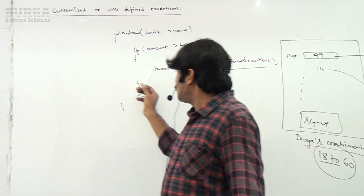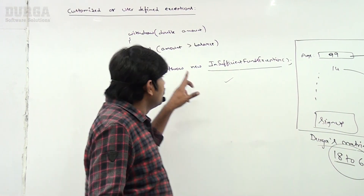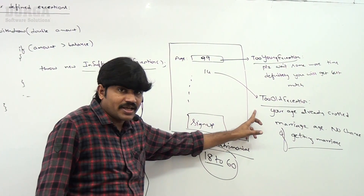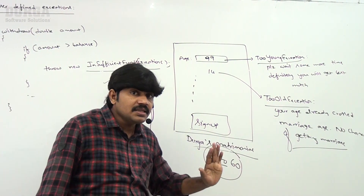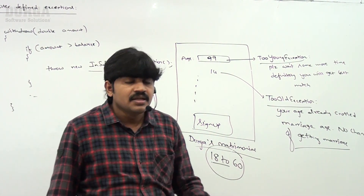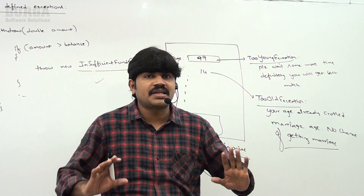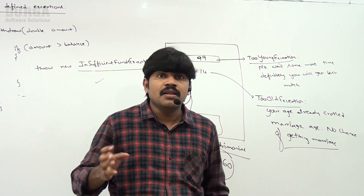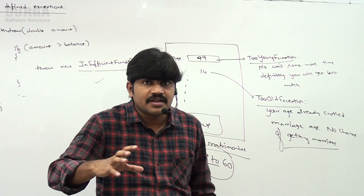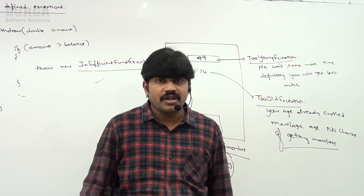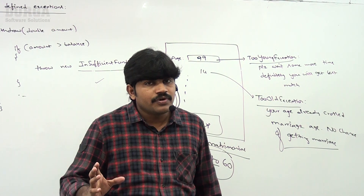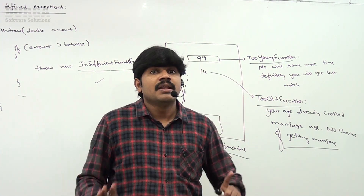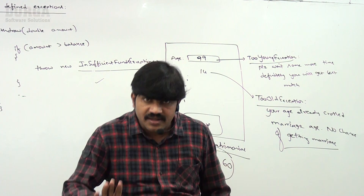Can you please spell out what is a customized or user-defined exception? The exceptions which are defined explicitly by the programmer to meet the programming requirement are called user-defined exceptions or customized exceptions. Examples: InsufficientFundsException, TooYoungException, TooOldException. These are by default considered customized or user-defined exceptions. If you feel comfortable I will explain with an executable example so that if any person asks in an interview you should be in a position to answer.